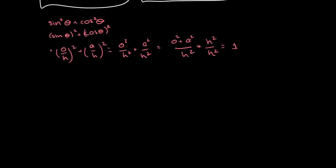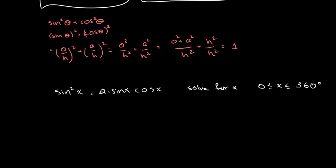Let's say for example that sine squared of x is equal to 2 times sine of x times cosine of x, and we have to solve for x where 0 degrees is less than or equal to x and it's between 0 and 180 degrees. So we can simplify this: we get sine squared of x minus 2 times sine of x times cosine of x is equal to 0.